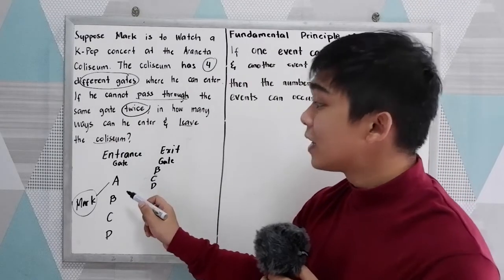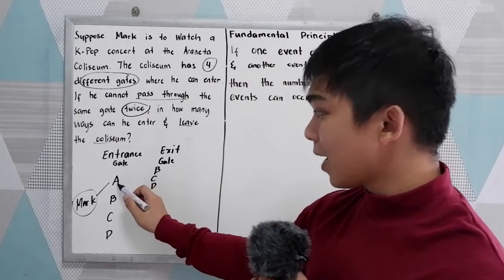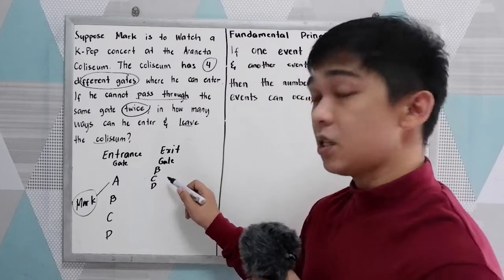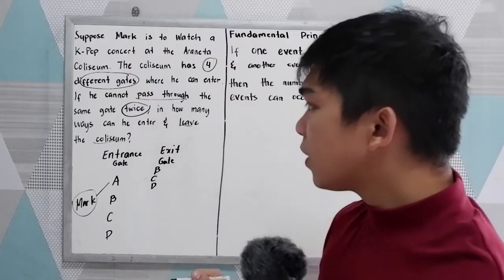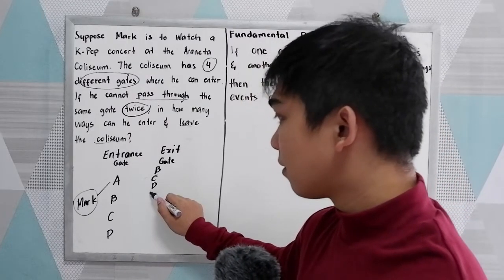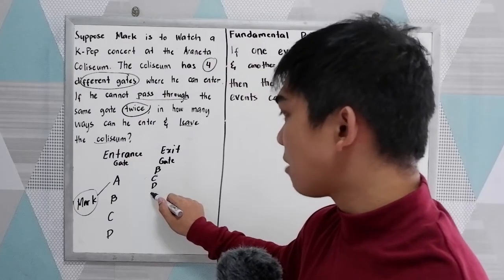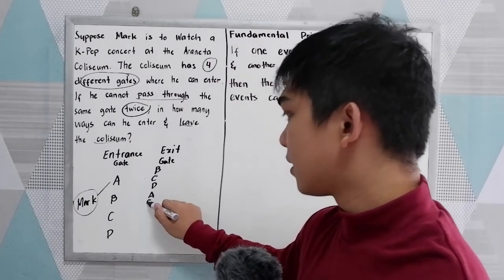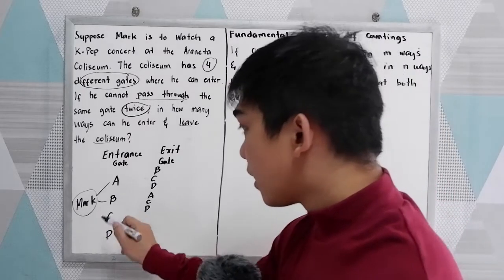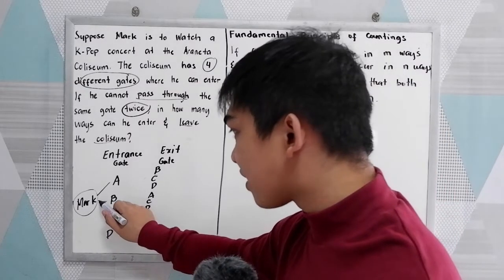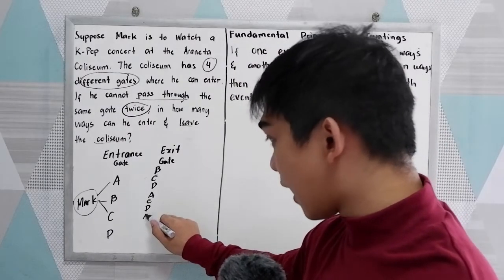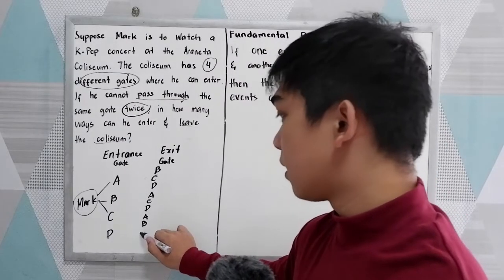If he enters at gate A, he exits at gate B, C, or D. If he will enter at gate C, then the possible exits can be A, B, or D.